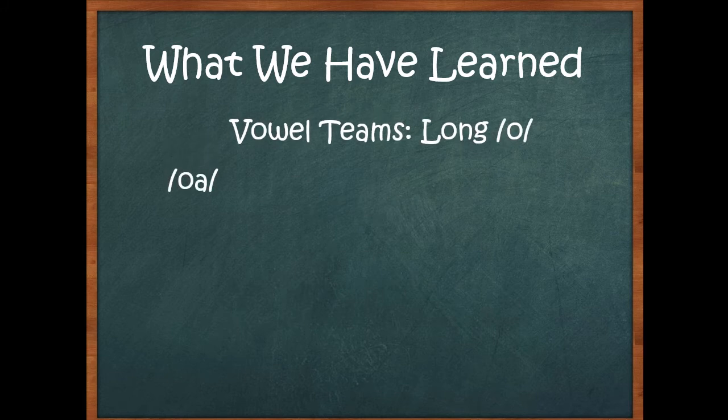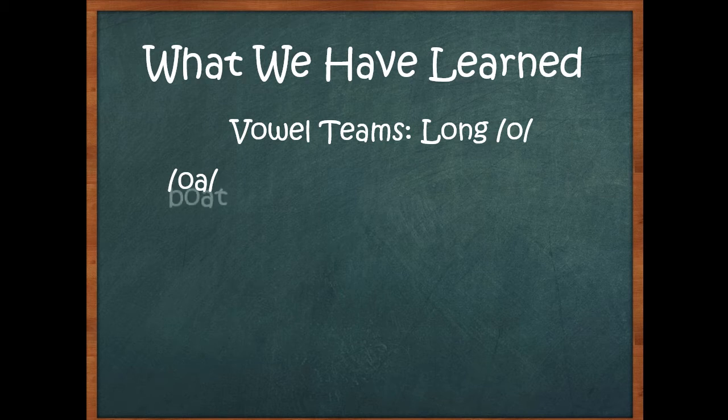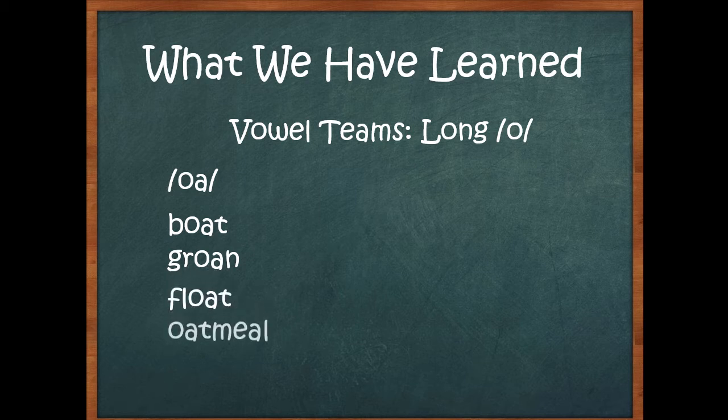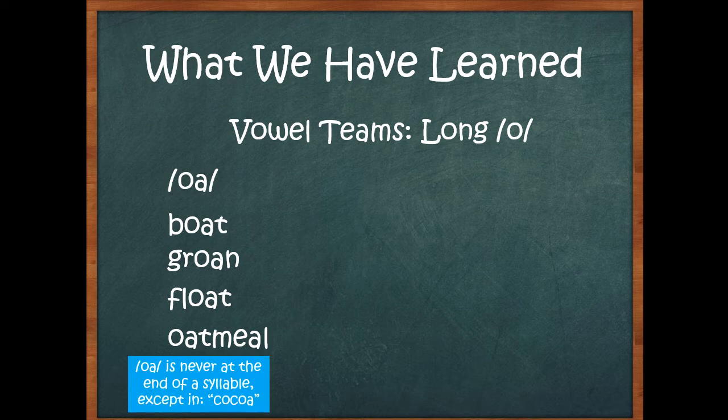So when we worked on long O, we saw OA like boat and groan, which is not the groan that we use when we see our relatives and they say, oh my Marcia, you have grown. Now this is groan, like every time I have to eat this I groan. And we saw it in words like float and oatmeal. Remember, OA is never at the end of a syllable except in the word cocoa.